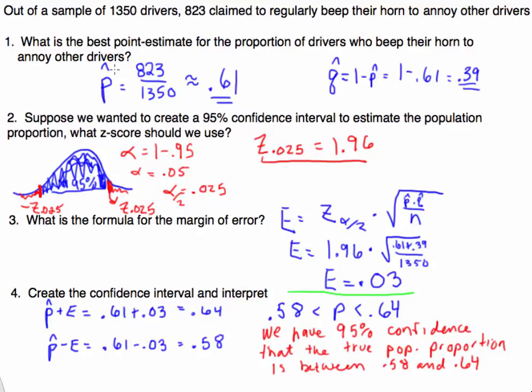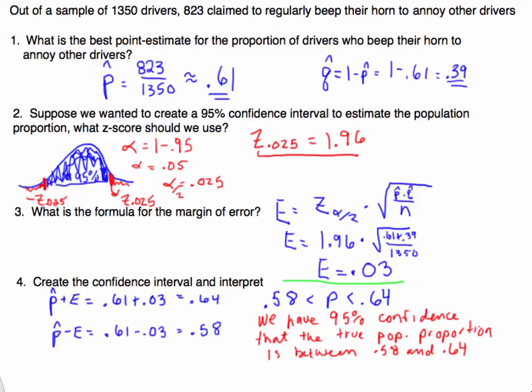First thing we need to know is what is a point estimate and how do we calculate it? What's the best point estimate for the proportion of drivers who beep their horn? This is just a sample and what we want to know is what would be the best estimate for the entire population.